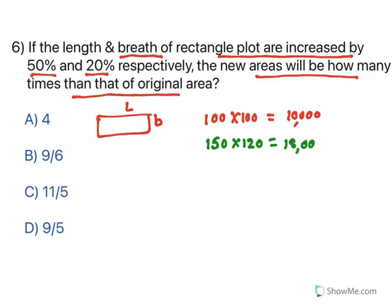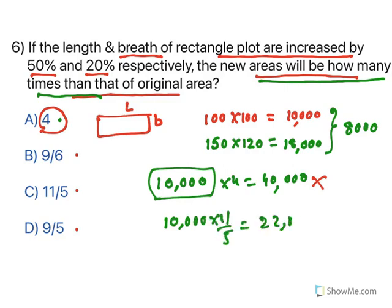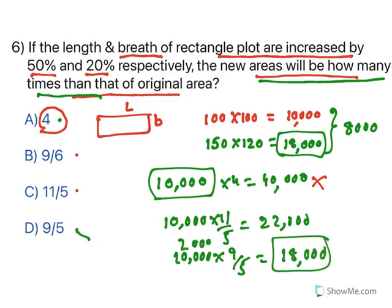So the new area is 150 × 120 = 18,000. The original area was 10,000 and it has become 18,000. Now the question asks how many times the new area is compared to the original. The first option says 4 times — that would be 40,000, so that is eliminated. Next option is 9/5: 9/5 × 10,000 = 18,000. That matches. So the new area is 9/5 times the original area, and the answer is D.